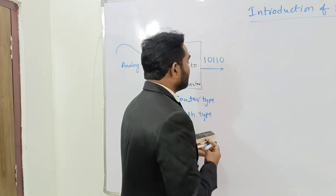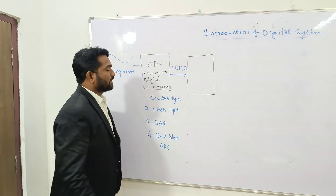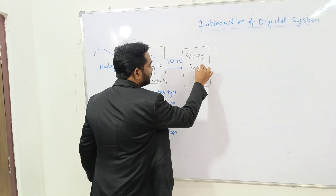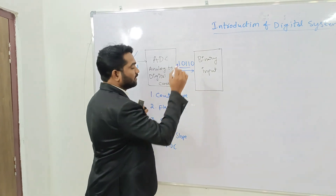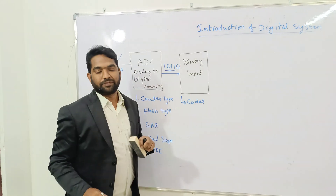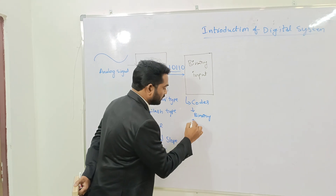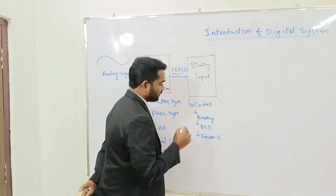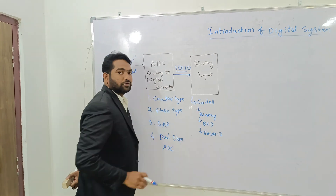After converting the analog signal into digital signal, we have a binary input. By using this binary input, we are converting the entire binary data into different types of codes. In codes, we will learn about binary code, BCD code, and XS3 code. All types of codes we will learn about — converting the ADC binary output into different codes.